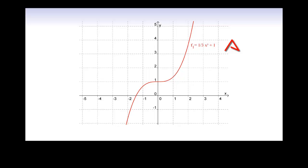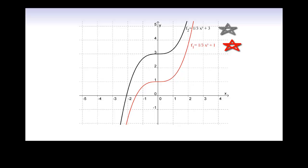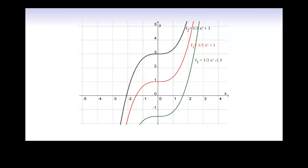Let's think about what this means graphically. Consider the functions 1 over 3 x cubed plus 1, 1 over 3 x cubed plus 3, and 1 over 3 x cubed minus 1.5. Looking at the graphs, we see that these are essentially the same graphs — they are just shifted up or down. This means they have the same slope at the same points, so they have the same derivative. For every differentiation rule you've seen, there is a corresponding anti-differentiation rule, which means you can check your work for an indefinite integral by differentiating to see if you get back to your original function.